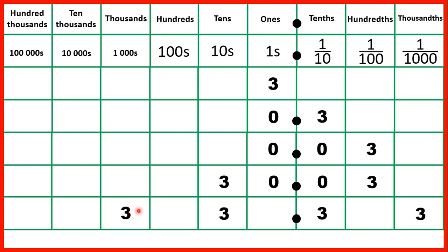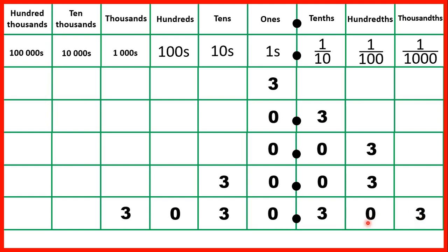Now what if we have three tenths and three thousandths? We really have zero in all of our other place values, but the only zeros we don't need are the zeros at the start of our number. We need this zero here because without it the three would be in our hundredths column, and we need to show three thousandths. The thousandths digit is always the third digit after the decimal point, so we need zero in our hundredths. These zeros are called placeholders — they don't have any value in themselves, but they give the other digits value by making sure the other digits are in the right place value columns.